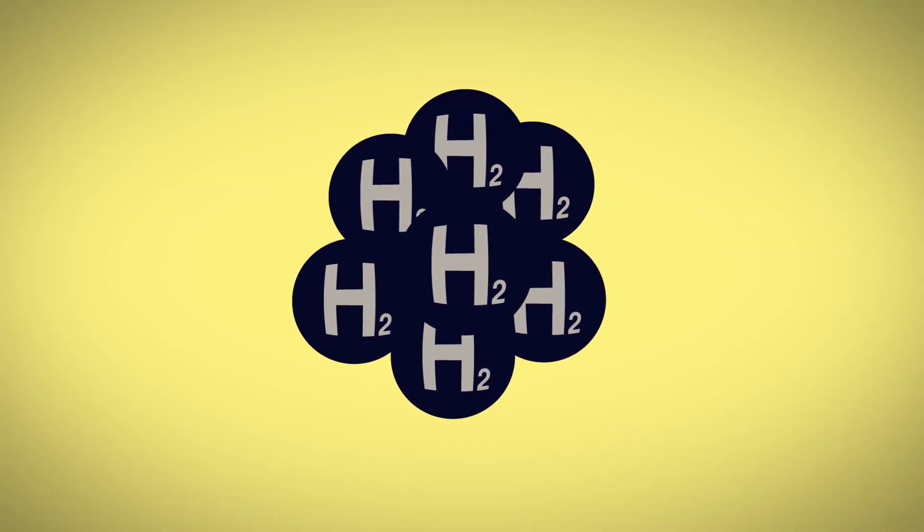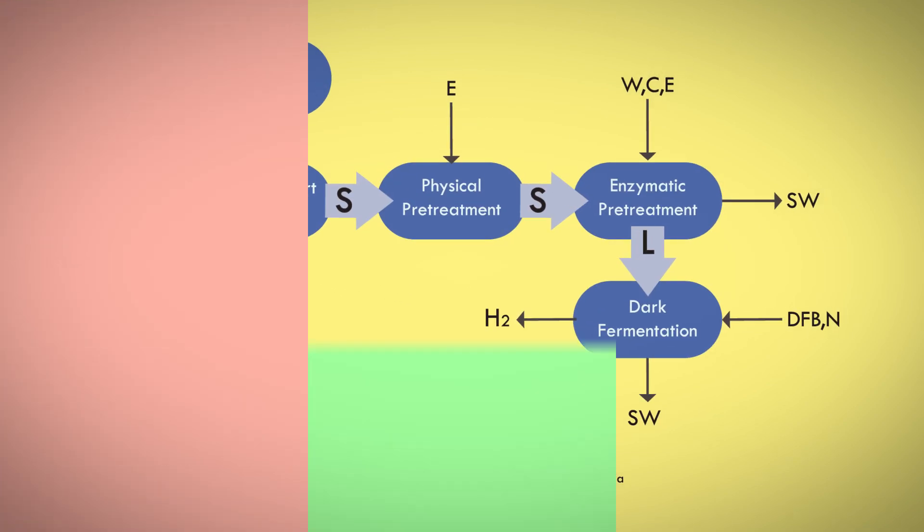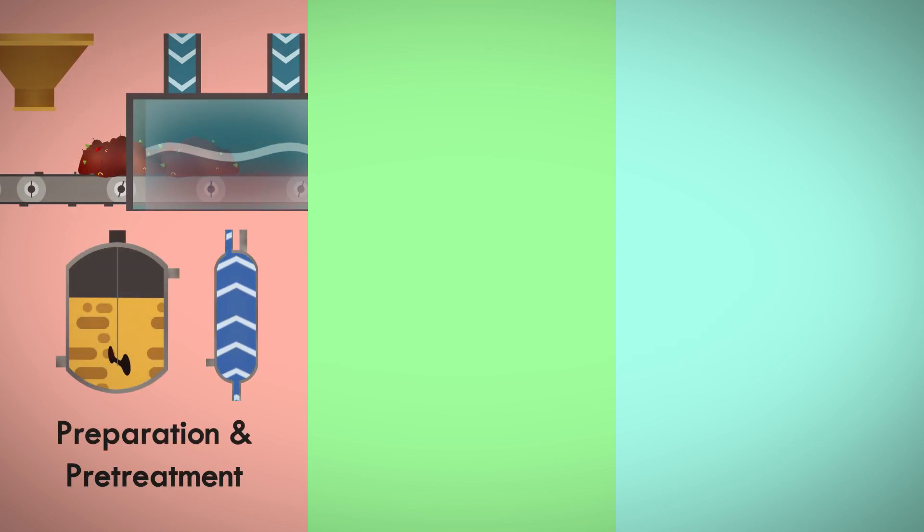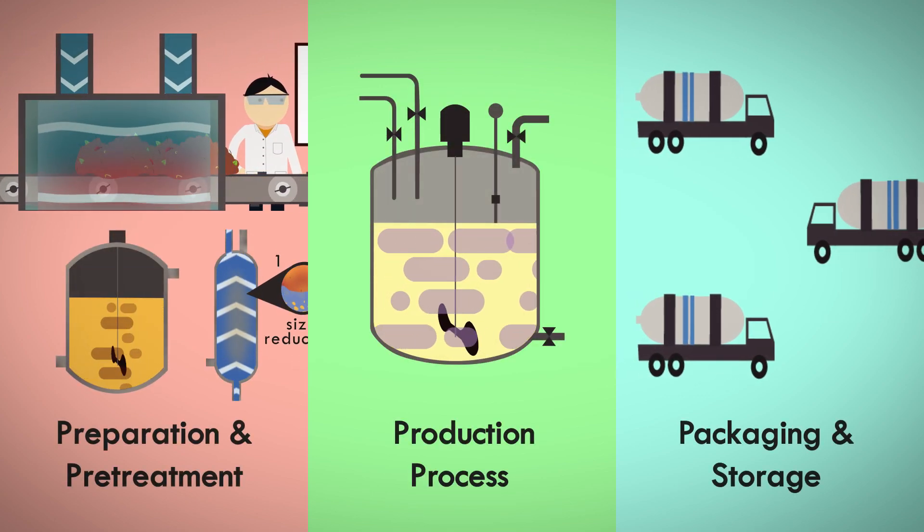The process of biohydrogen production from biomass is divided into three main stages, namely preparation and pretreatment, production processes, packaging, and storage.